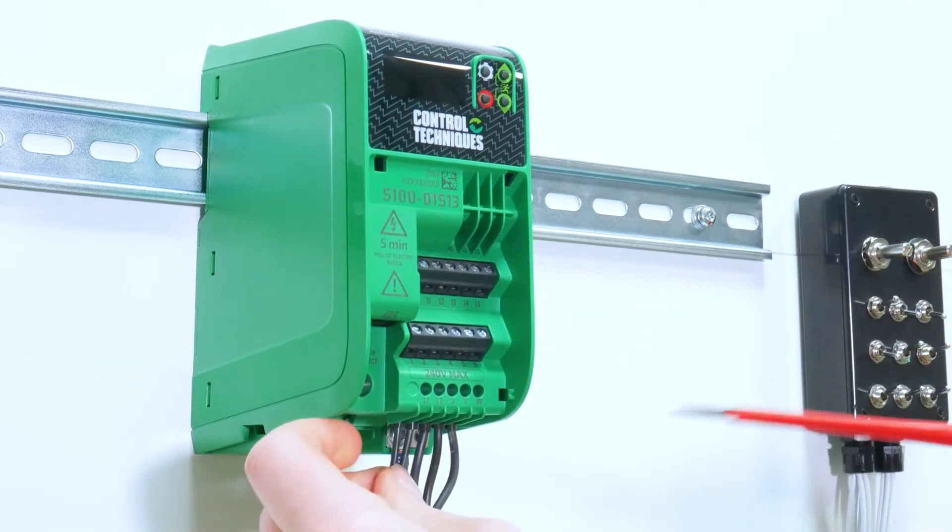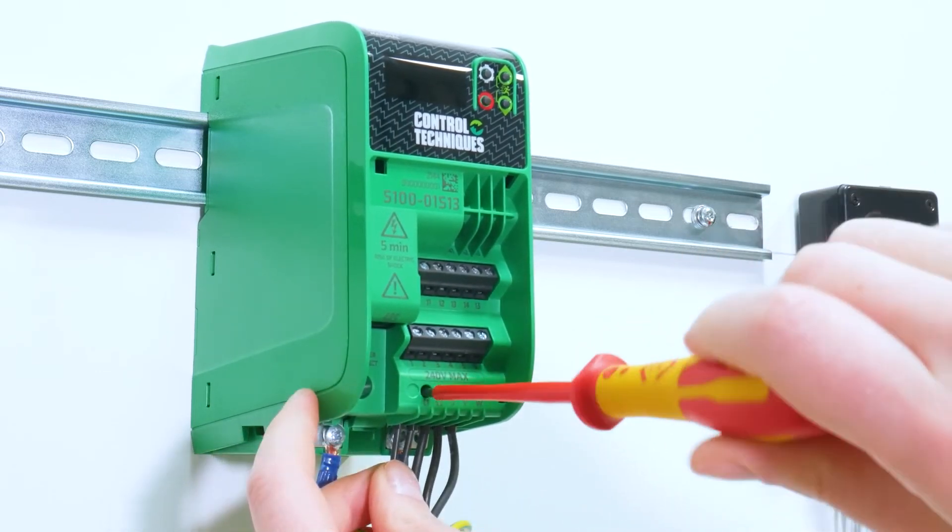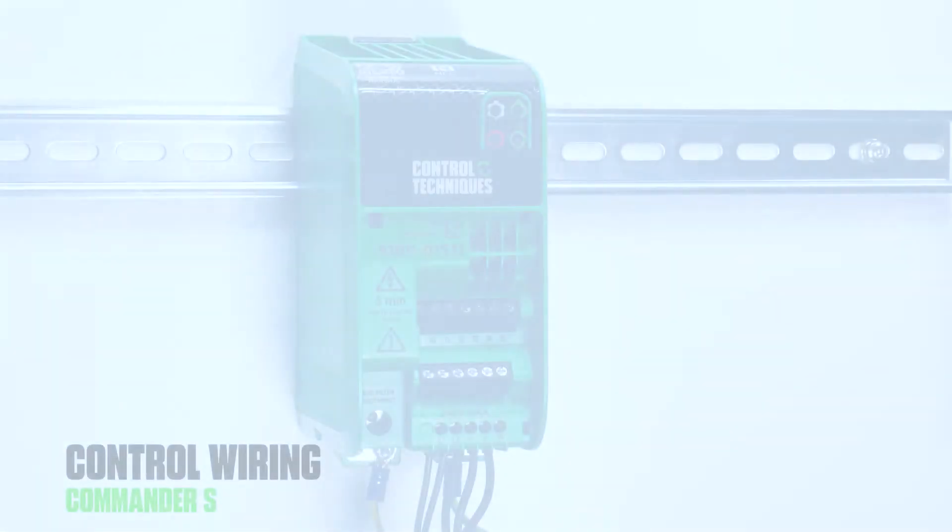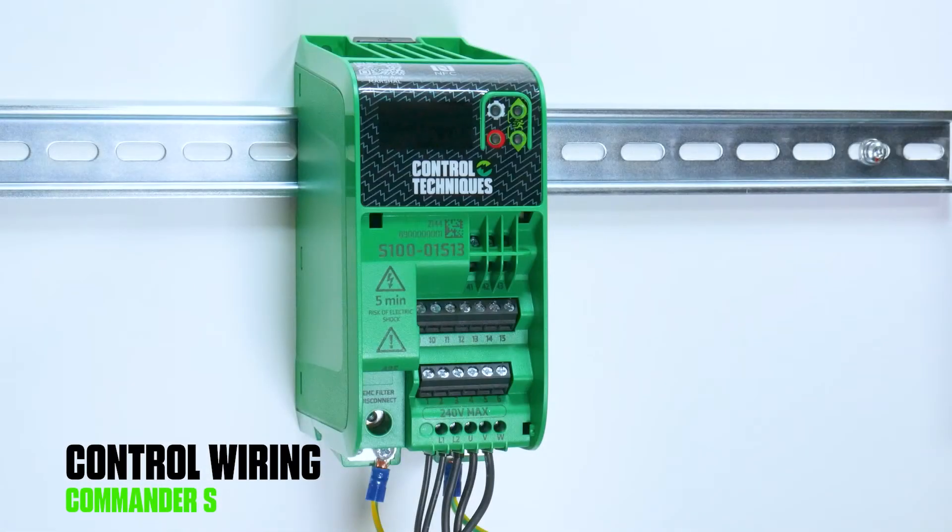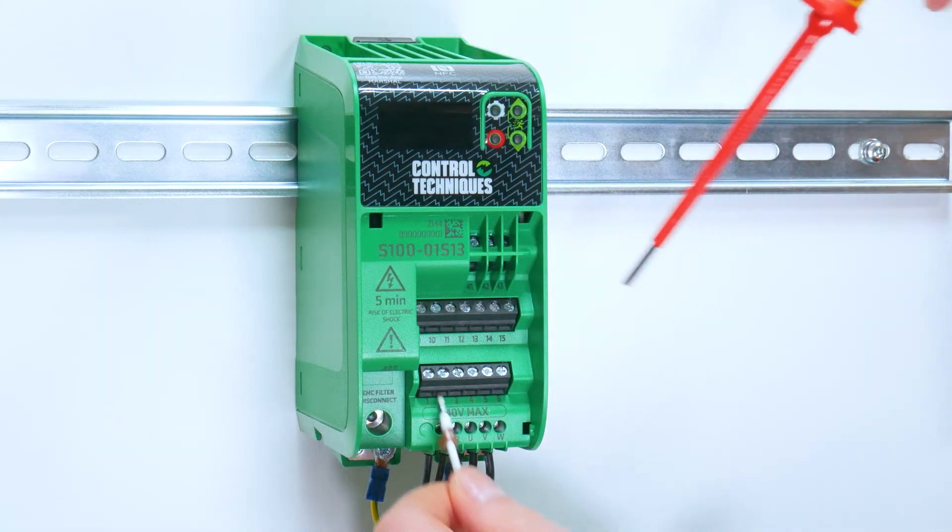Followed by your supply cables. Once you've connected all of your power cables, move to the control wiring. There's a wiring guide available in the step-by-step guide and in Marshall.